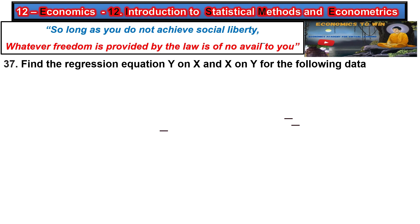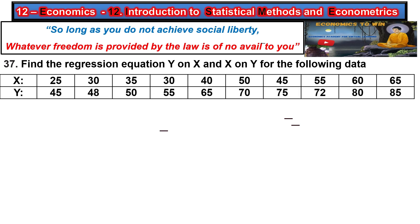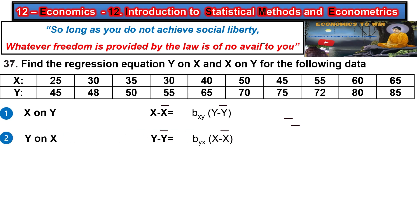Question number 37: Find the regression equation y on x and x on y for the following data. We have to calculate the regression equations. The first formula is x on y: x minus x̄ equals b(xy) into y minus ȳ. The second formula is y on x: y minus ȳ equals b(yx) into x minus x̄.